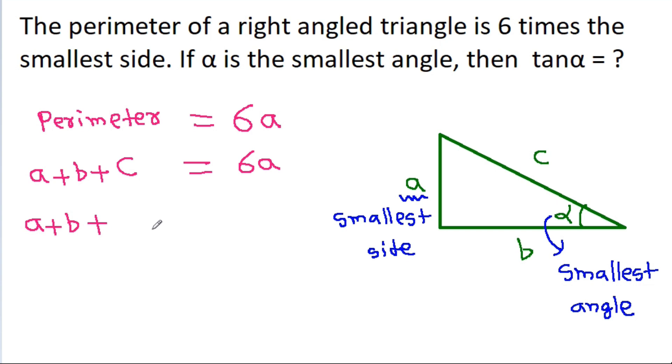By Pythagoras theorem, c = √(a² + b²). From the perimeter equation, c = 6a - a - b = 5a - b. Therefore, √(a² + b²) = 5a - b.